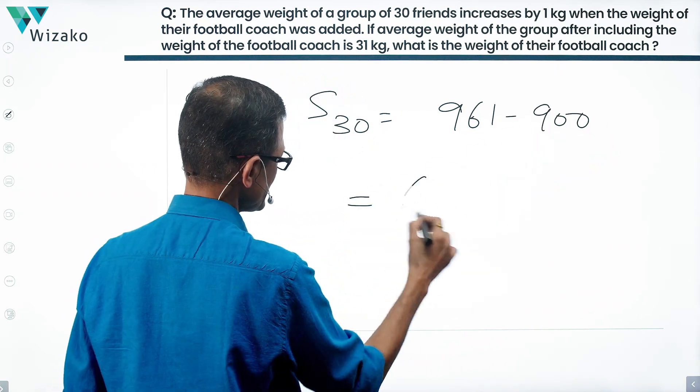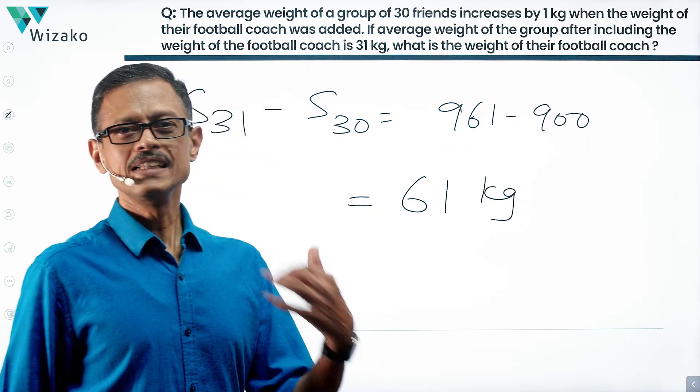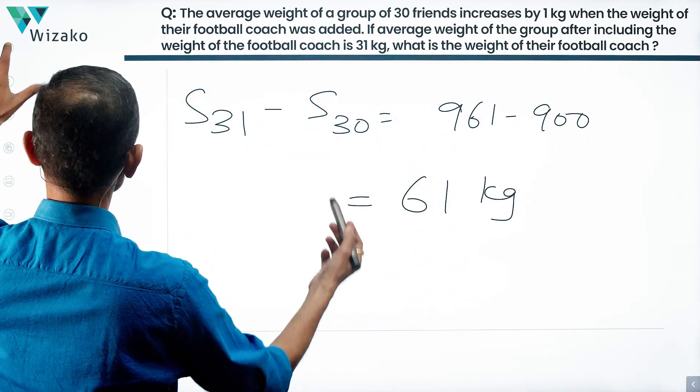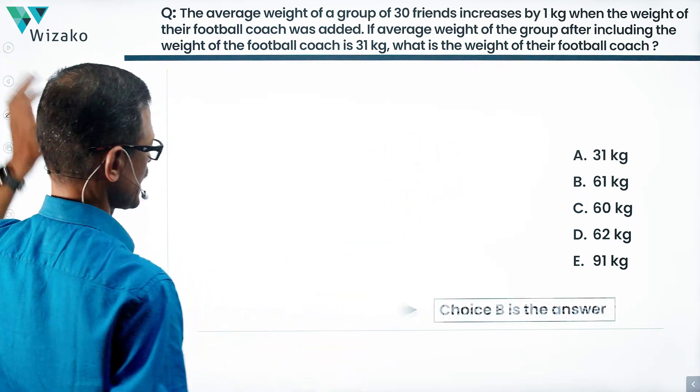Don't write any of these steps. I'm writing it because we are in a learning mode. In the examination, it should say 961 minus 900 is 61. Find out the answer option, mark it and move on. Choice B is the correct answer to this question.